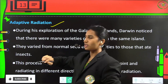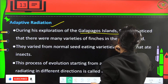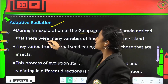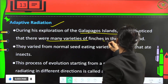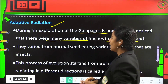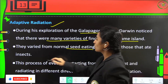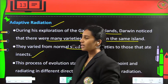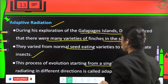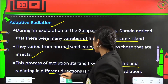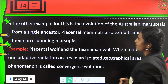Adaptive radiation: during exploration of the Galapagos Islands, Darwin noticed many variants of finches on the same island, varying from normal seed-eating varieties to those that ate insects. This process of evolution starting from a single point and radiating in different directions is called adaptive radiation.